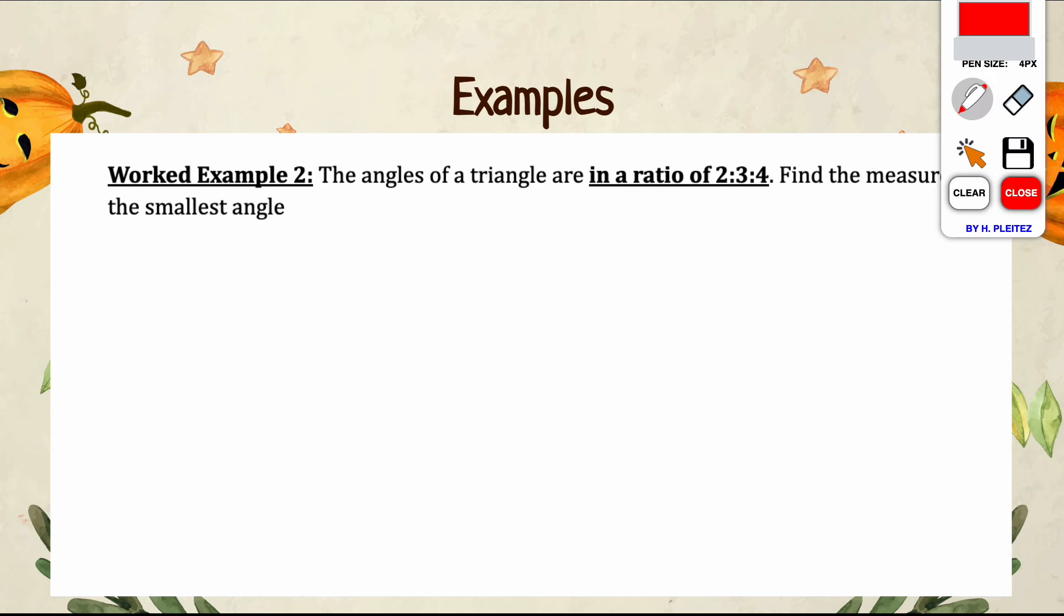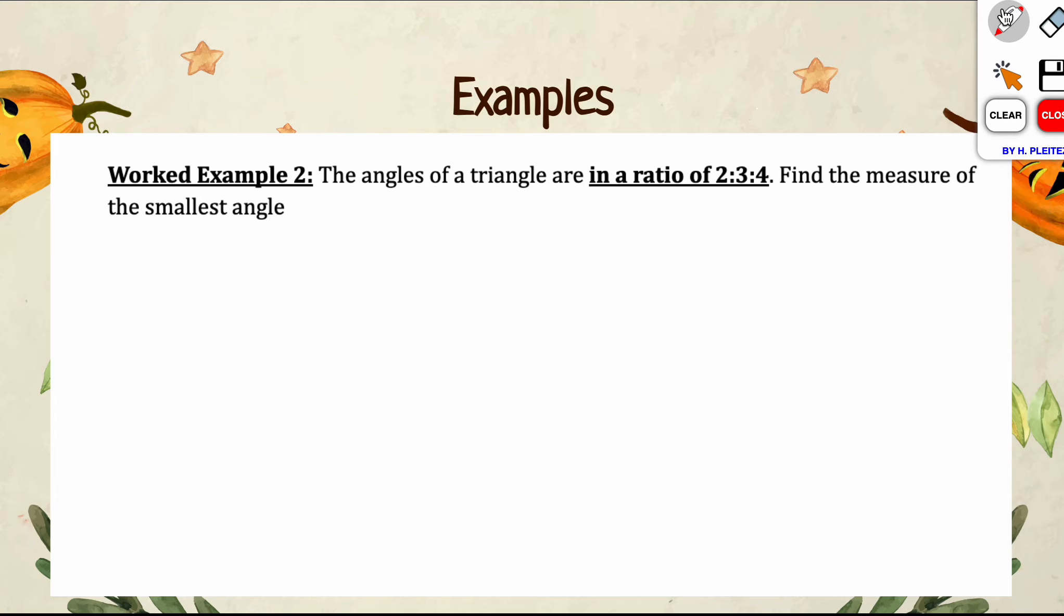Worked example number two. There might be times where you don't have a picture to refer to, and if that's the case, you've got to draw one. This wording of this question we're going to talk about. It says the angles of a triangle are in a ratio of 2 to 3 to 4. Find the measure of the smallest angle. If there's not a picture in any type of question, even if it doesn't deal with triangles, you have to draw one. It says the angles are in a ratio of 2 to 3 to 4. This is bolded and underlined for a reason because whenever you have this, you need to rewrite your ratio incorporating X's: 2X, 3X, 4X.